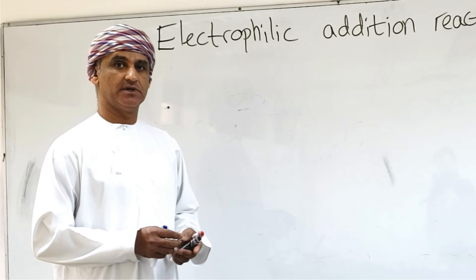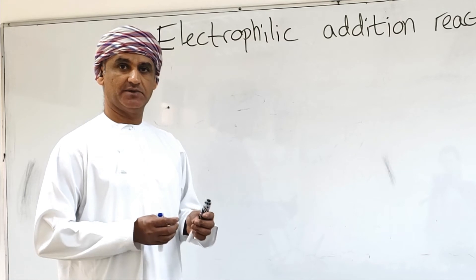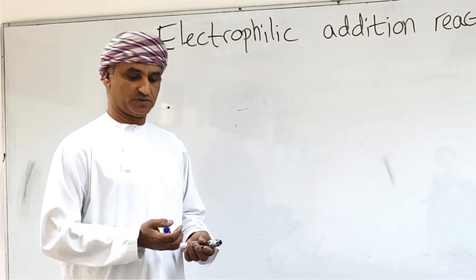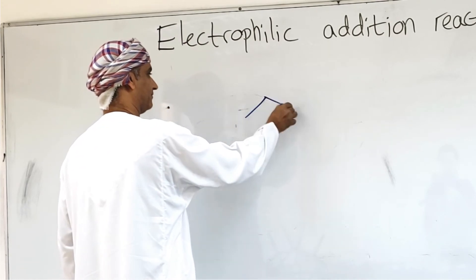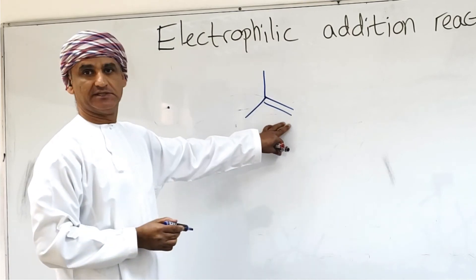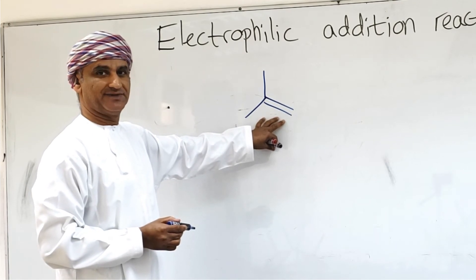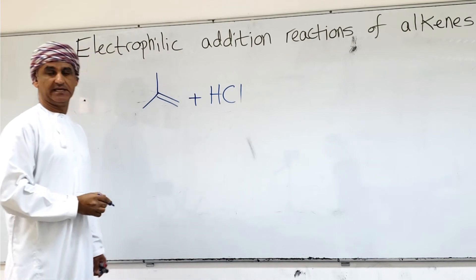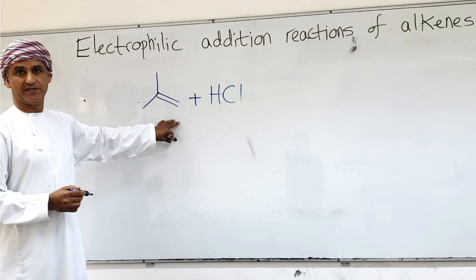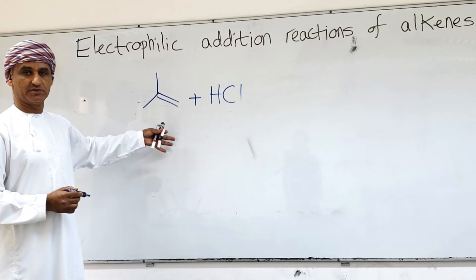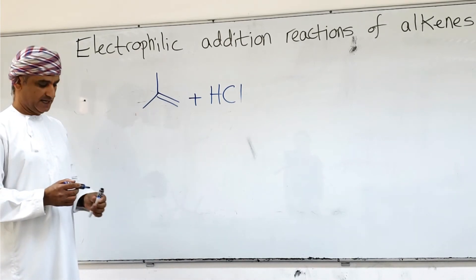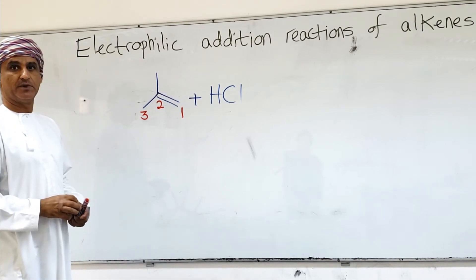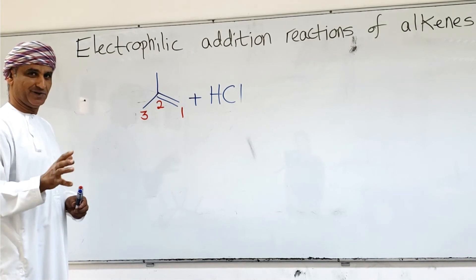Let's take another example of electrophilic addition to an alkene — specifically, addition of HX to an alkene — to continue the explanation of Markovnikov's rule by carbocation stability. In this alkene, the two carbon atoms of the carbon-carbon double bond are not the same; they have different numbers of hydrogen atoms. Adding HCl following Markovnikov's rule, hydrogen bonds to carbon one and Cl bonds to carbon two.